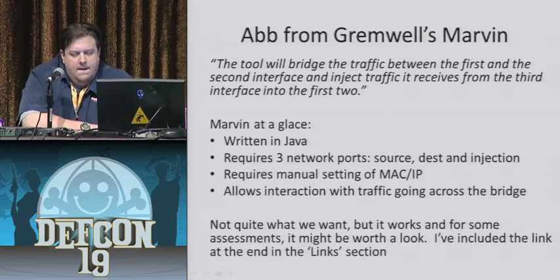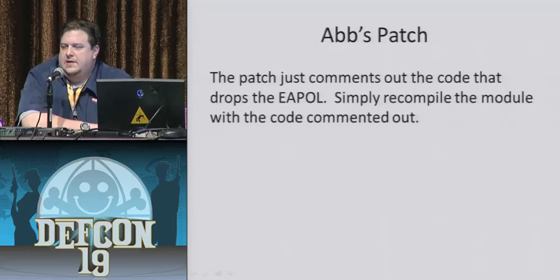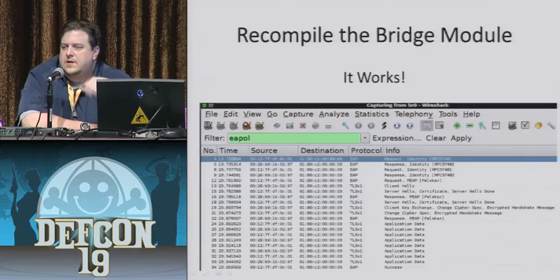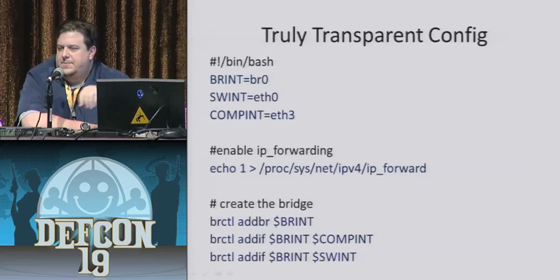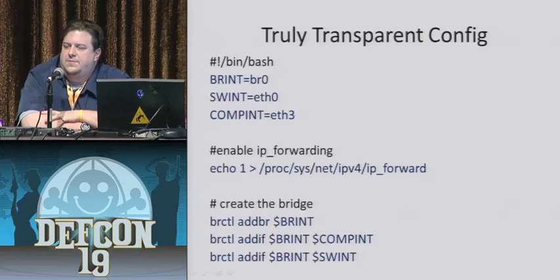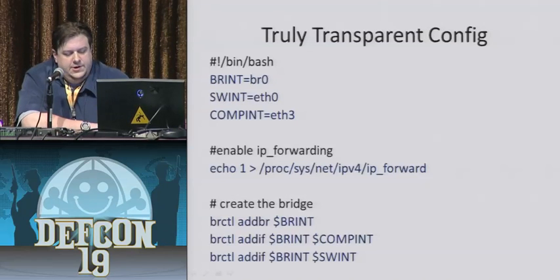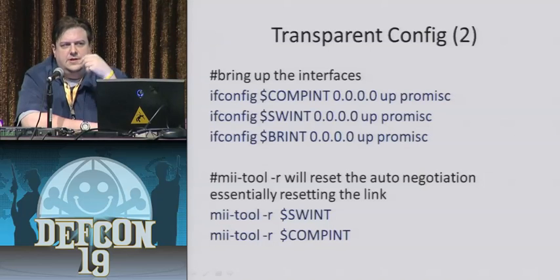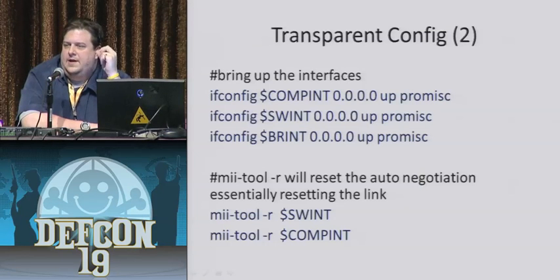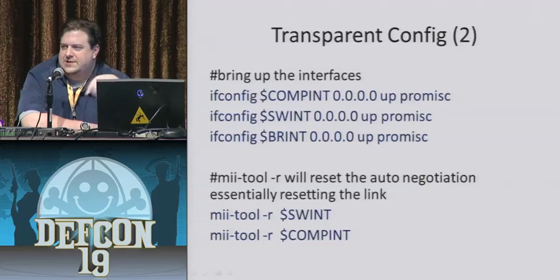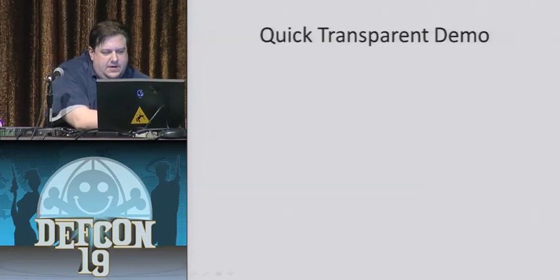His patch basically commented out the new 2.6 code that drops the EAPOL traffic, and now we can pass EAPOL on the bridge. It's pretty easy to get the transparent configuration going — just set up some environmental variables to make life easier, enable IP forwarding, create the bridge, bring up the interfaces. Then using the MII tool in Linux, we can actually reset the link by forcing speed renegotiation, which physically drops the link and brings it back up so we can simulate disconnecting the cable remotely. So that's pretty cool.